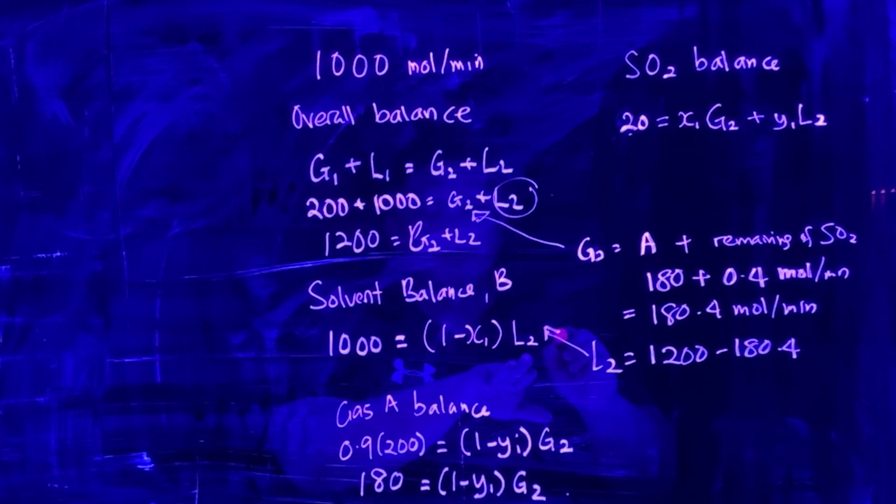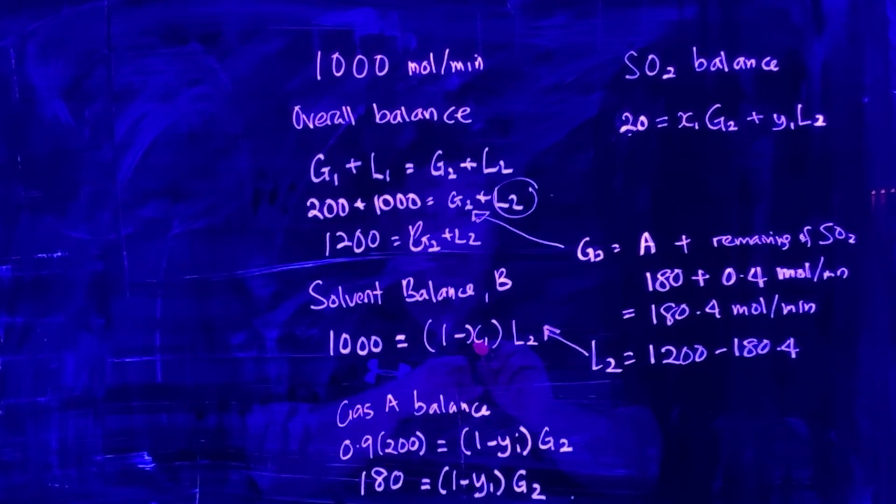You can get (1 - x1). At the same time, because you know G2, you can substitute here to determine your y1, which is (1 - y1) and y1 itself. That's how you perform the overall balance for this particular problem.